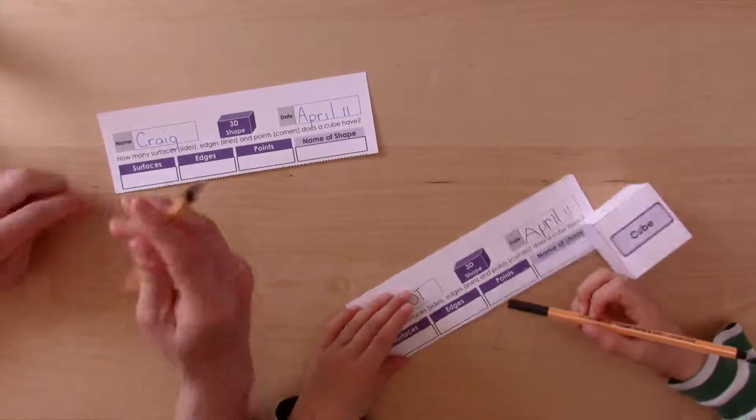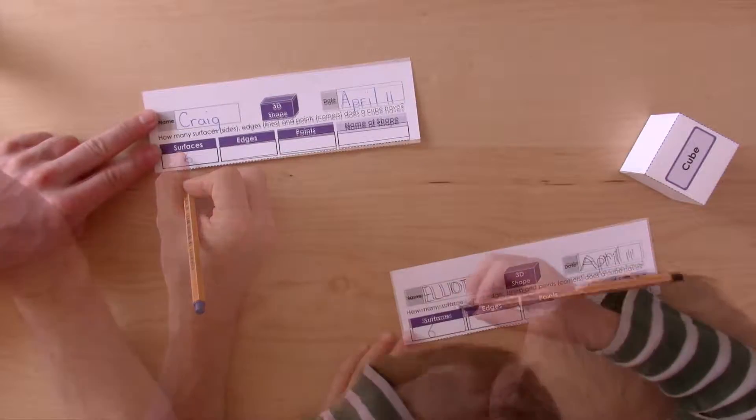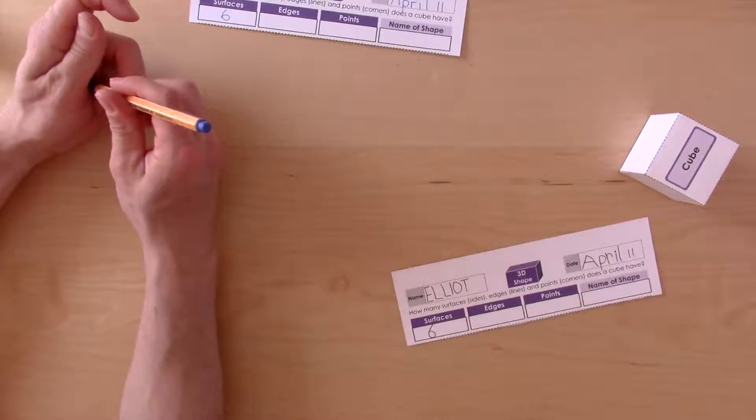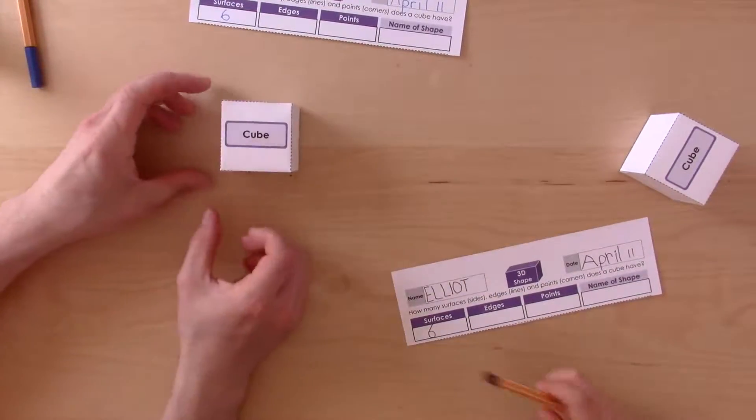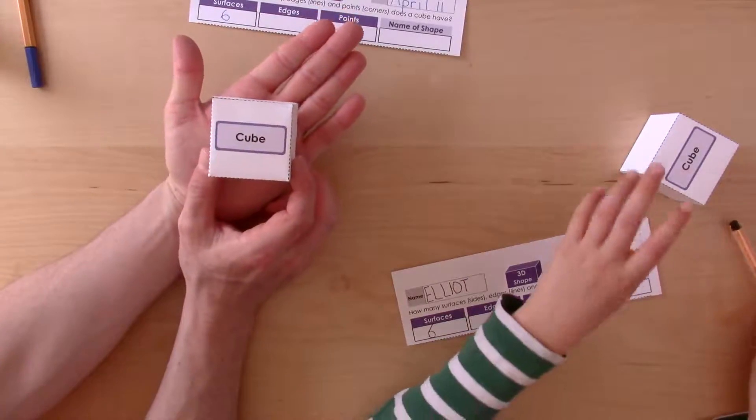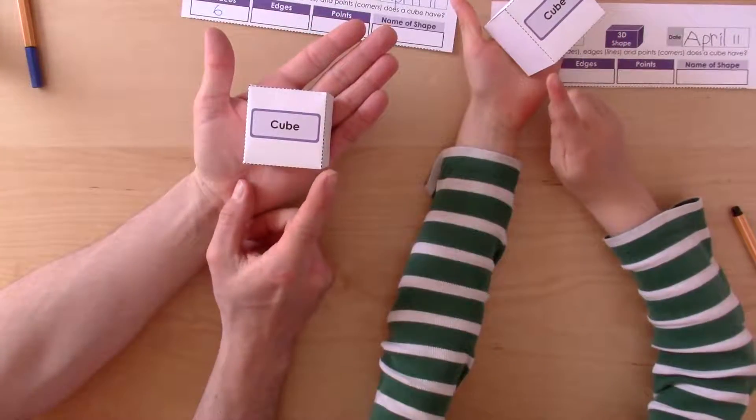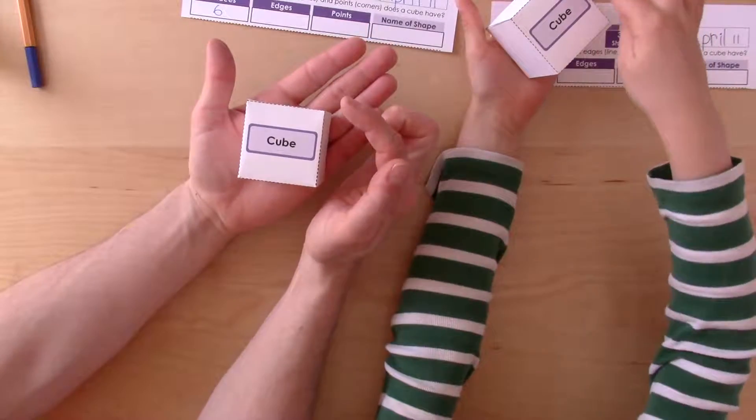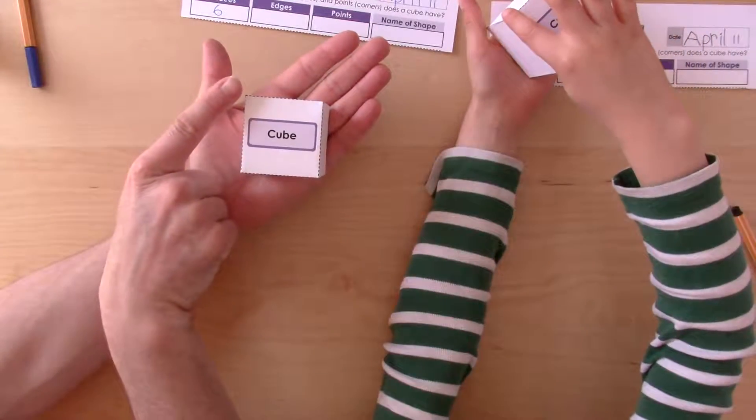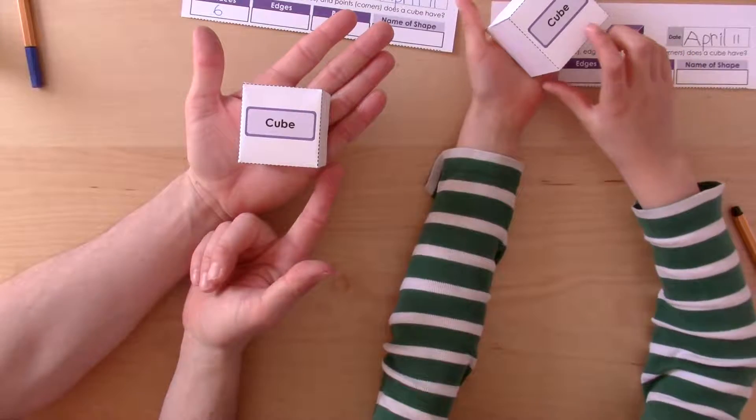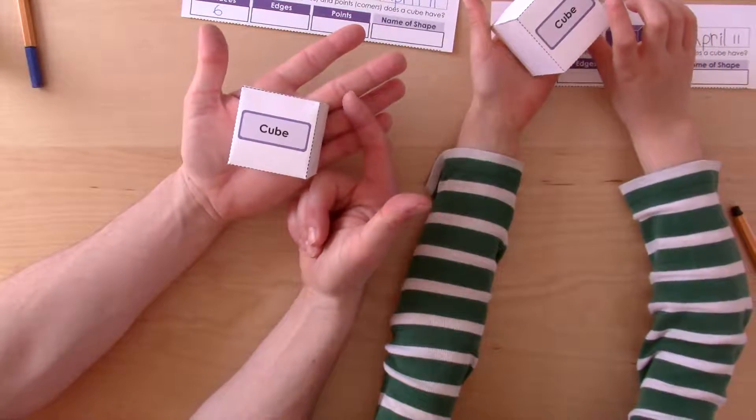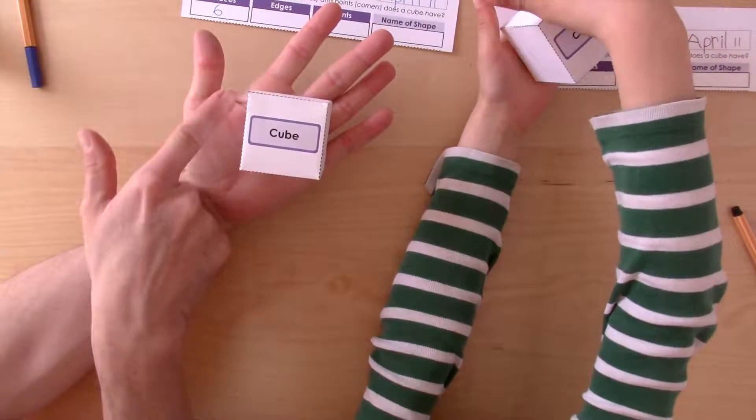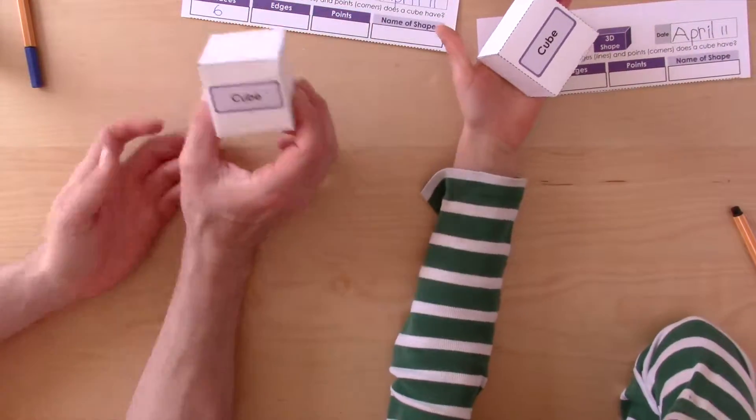So we can record our information right here. Okay, and then now we're going to do the points. So again, we'll rest it on our hands. One, two, three, four. Now the bottom. Five, six, seven, eight. So there's eight points.